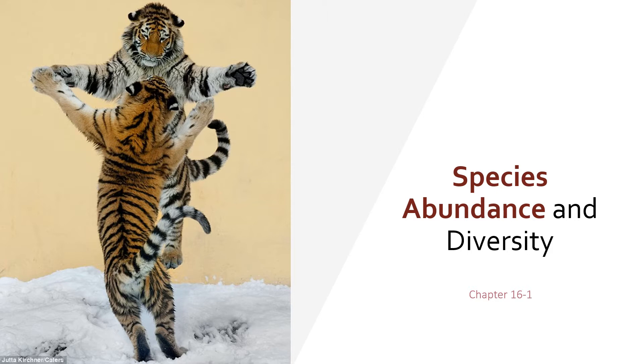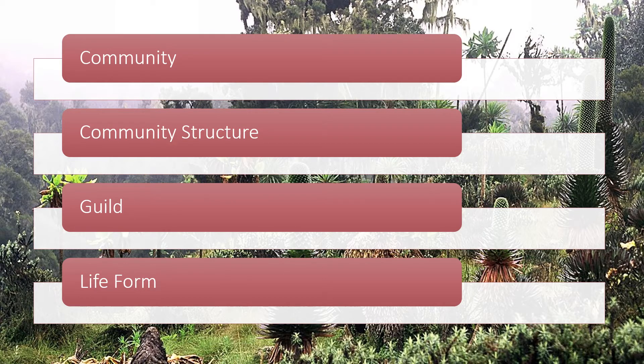We're going to be talking first about the number of different types of species — species richness. Some terminology as we go through this concept: we'll be talking about community ecology. Communities refer to the biotic species inhabiting a certain area — plants and animals, invertebrates, algae — all these species interacting in different ways. You can look at community structure and how it affects the number of species, the relative abundance of each species, and what kinds of species you find within the community.